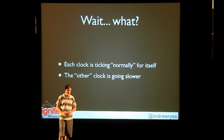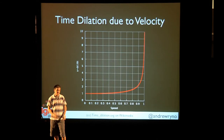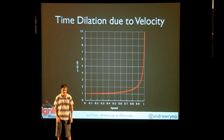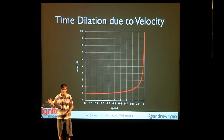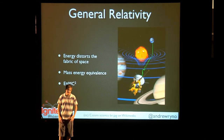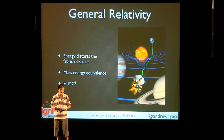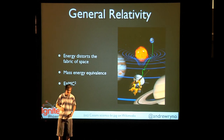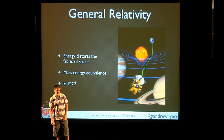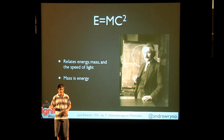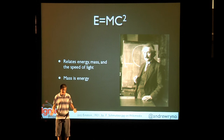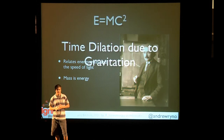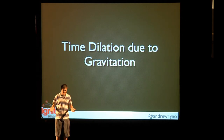That is what special relativity is about. That effect is called time dilation due to velocity. If you have two objects moving at different velocities, there's a time difference, and the closer you get to the speed of light, the greater that time difference is. General relativity, also developed by Einstein, basically describes the universe. Energy distorts the fabric of space, and due to E=mc², mass is energy. So when energy or mass distorts spacetime, you have time dilation due to gravitation — time slows depending on different factors: first velocity, now gravity.